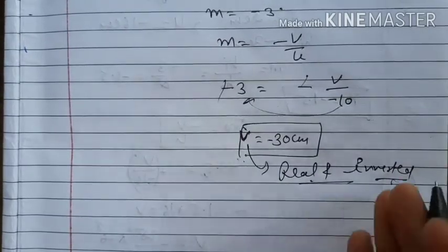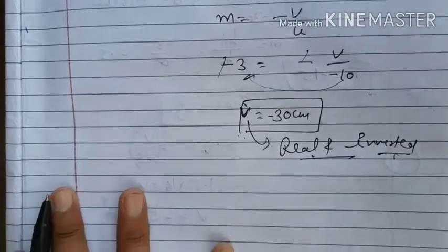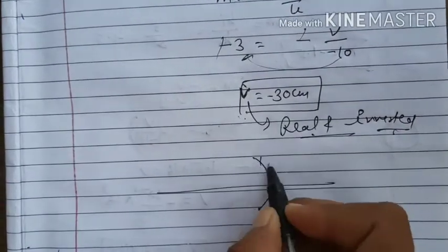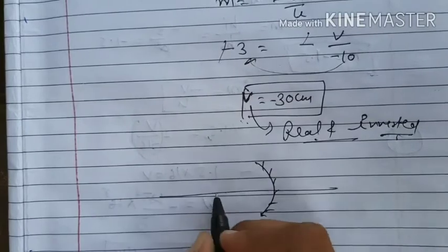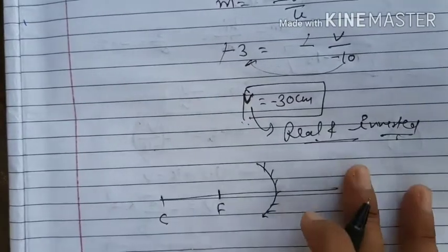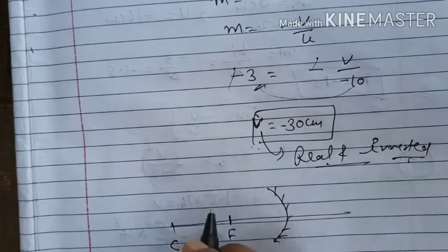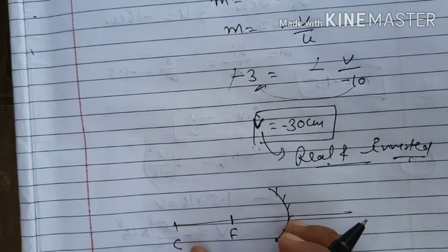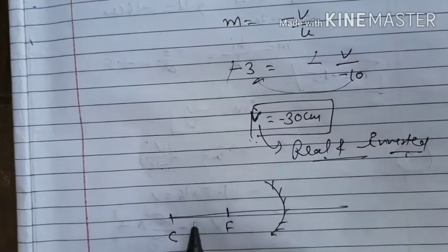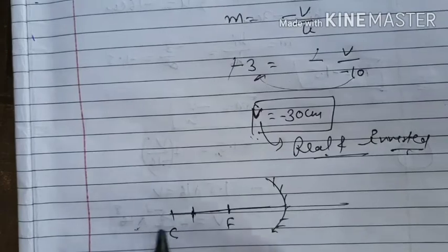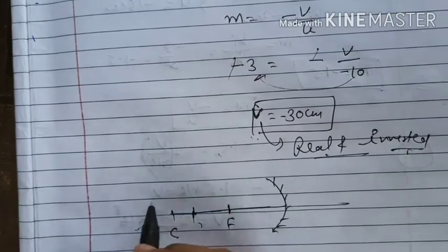Since v = −30 cm, the image is real and inverted and forms in front of the mirror. The image is bigger than the object — if the object is at 10 cm from the concave mirror, the image is at 30 cm. This is our solution for question number three.